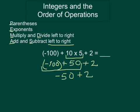Now we work negative 50 plus 2. We have 50 negatives, 2 positives, and we have negative 48.